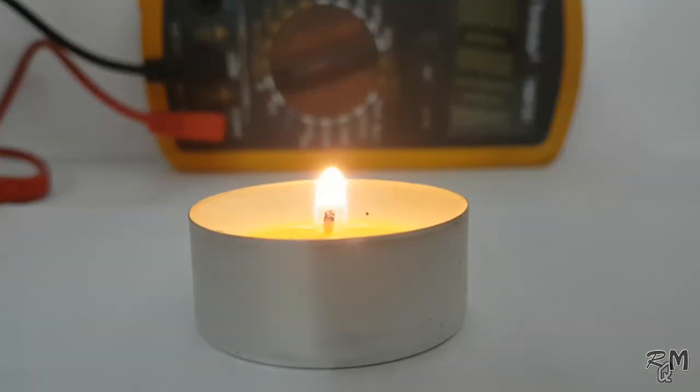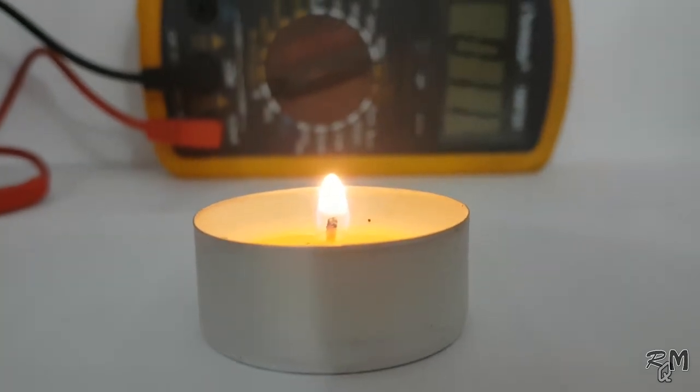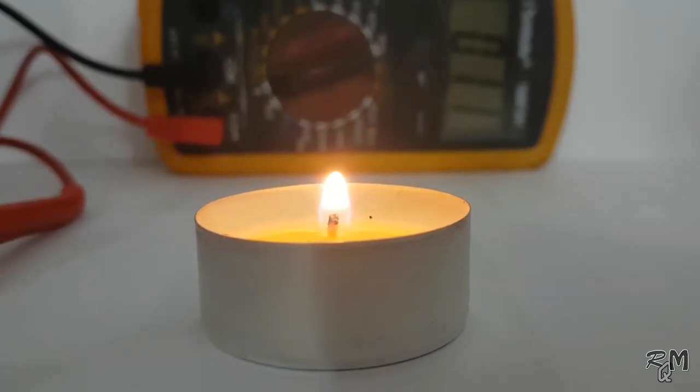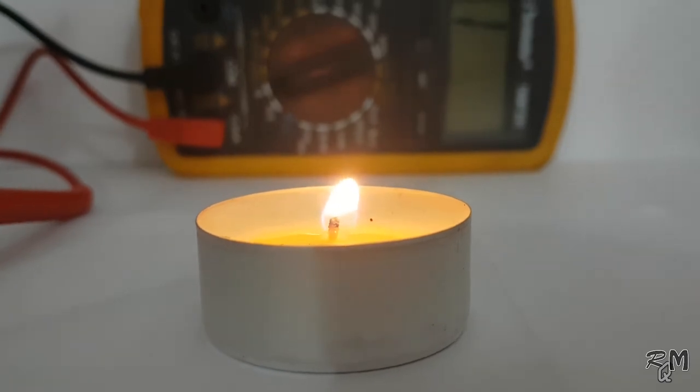When I take it away from the flame, the bi-metallic contact cools down and the circuit becomes open. You can see the multimeter resistance is infinite now.